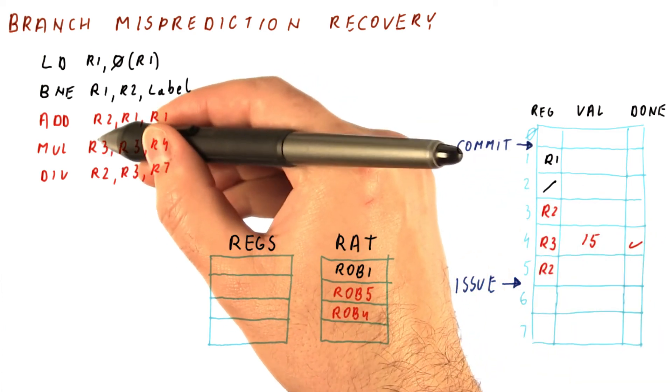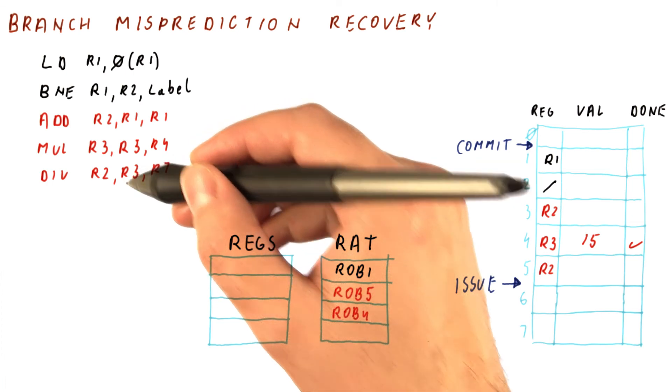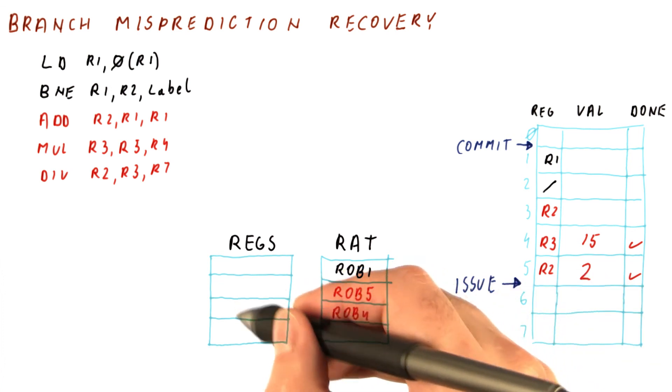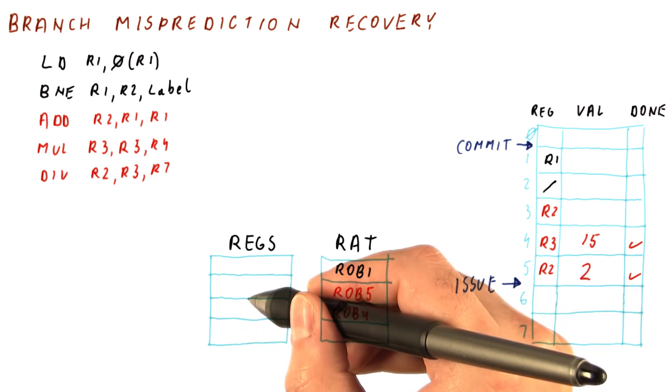Once this multiply produces a value, the divide can begin. And let's say that the divide is producing a value of two. And it might also be done before the load returns. So now we have a situation where these two instructions would have updated registers and done permanent damage.